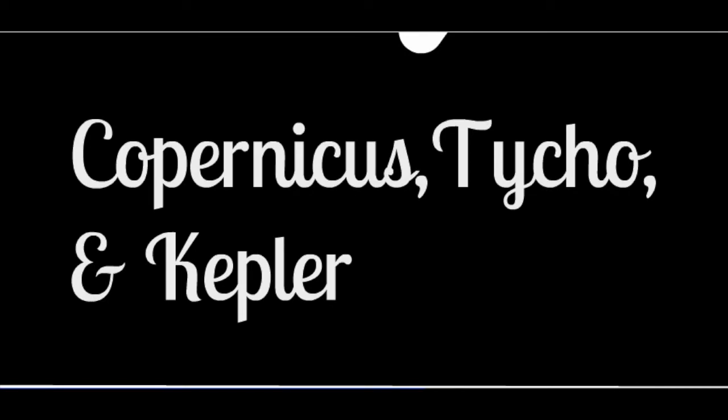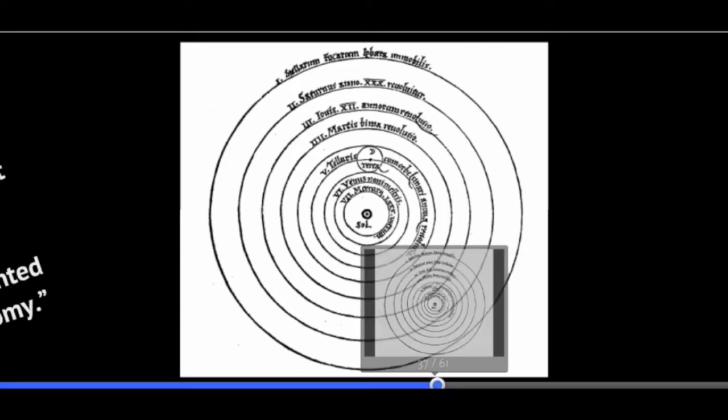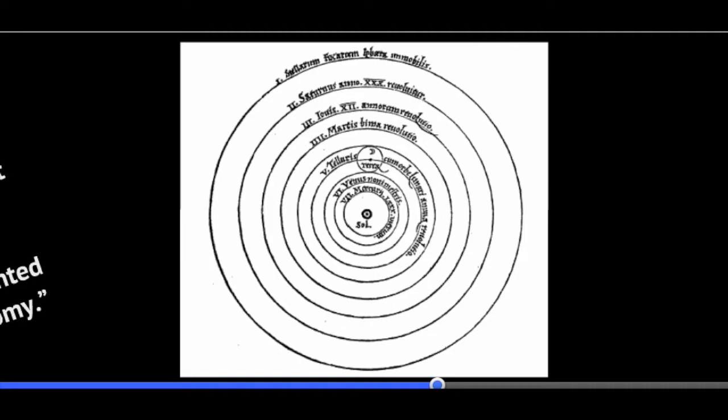One was Nicholas Copernicus, Tycho Brahe, and Johannes Kepler. Nicholas Copernicus came up with a system where the sun was at the center and the earth was the third planet out. You can see the moon orbiting the earth in this old picture, which is a dramatic change from the picture of Ptolemy.